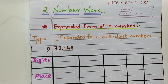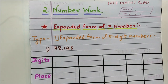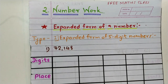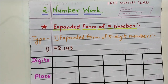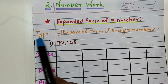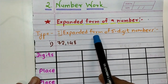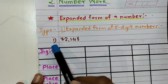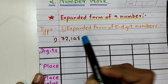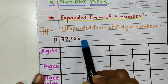Friends, here we are going to solve three types of examples. First type is five-digit numbers, second type is six-digit numbers, and third type is seven-digit numbers. Our first type is expanded form of five-digit numbers, and our first example is 72148.